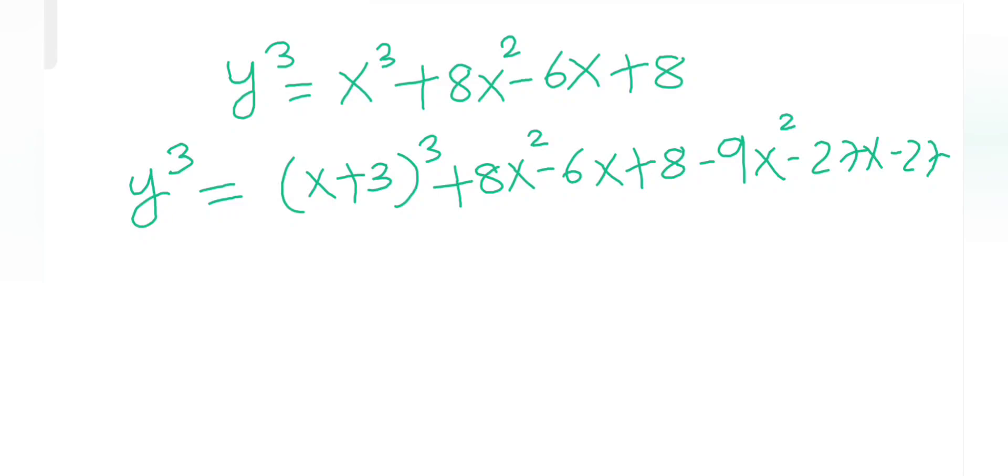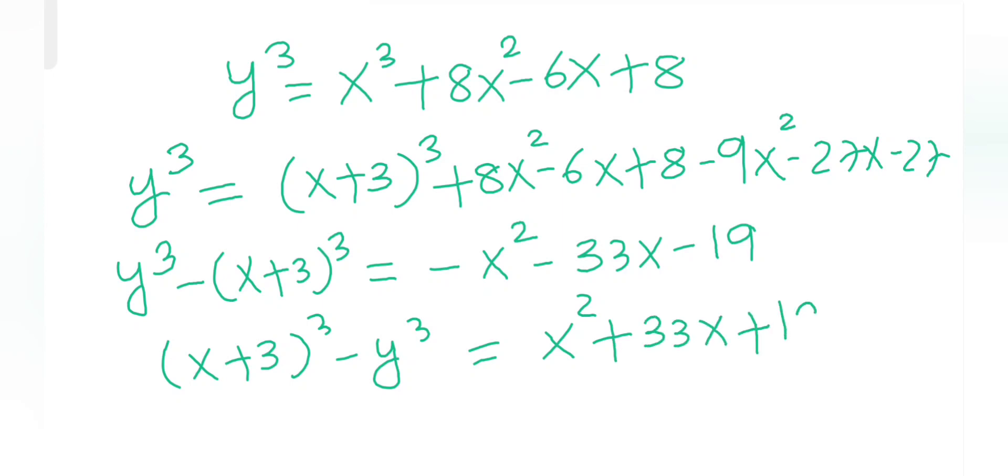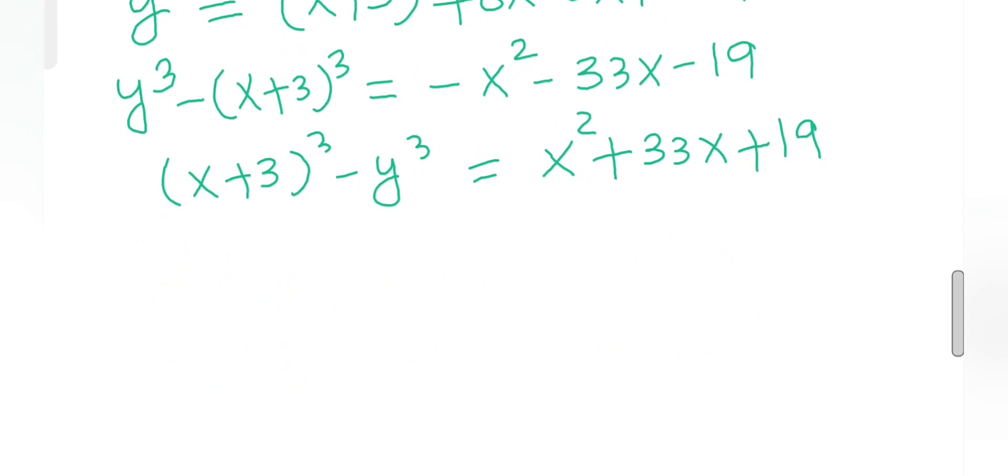Let's simplify. y³ minus (x+3)³ must equal minus x² minus 33x minus 19. Now reverse this: (x+3)³ minus y³ equals x² plus 33x plus 19. Now let's analyze this. Here this is a quadratic equation where a is positive.